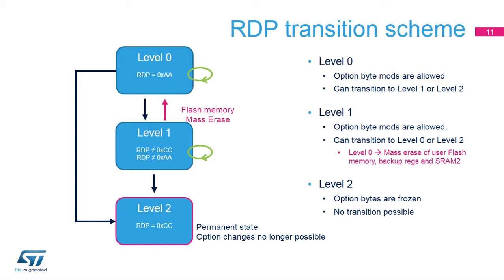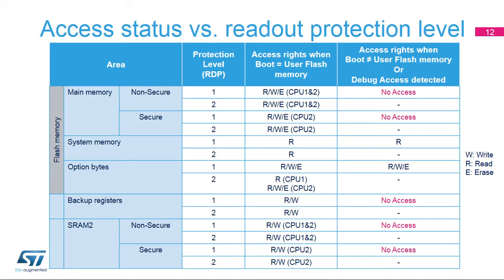Level 2 is a permanent state, and moving to another RDP level is not possible. This table summarizes the different types of access authorized for the flash memory, backup registers, and SRAM2, according to the readout protection or RDP level, configured boot mode, and debug access, as previously discussed.